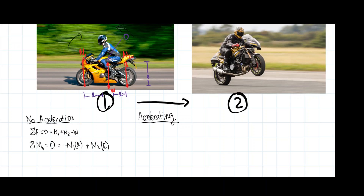Now let's look at what happens at the nitty-gritty level when we start accelerating. The engine creates a moment that acts on the rear wheel, angularly accelerating it in the counterclockwise direction. Because there is ground underneath the rear wheel, the rear wheel scrapes against the ground and pushes it backward. By Newton's third law, the ground pushes the wheel forward — that frictional force is actually how the motorcycle moves. The sum of forces in the x-direction is no longer zero; it equals ma, and that equals the force of friction.